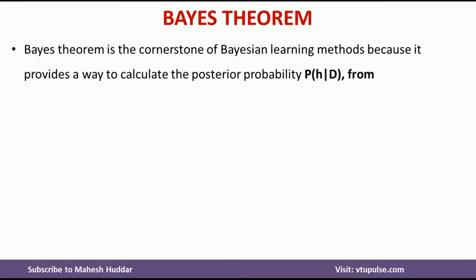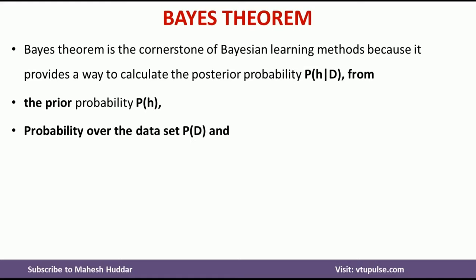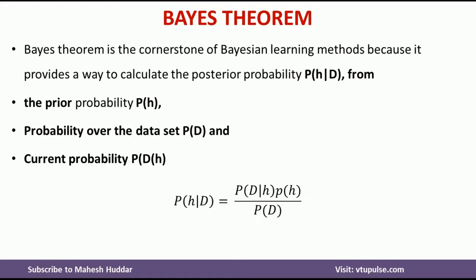Bayes Theorem is the cornerstone of Bayesian learning because it provides a way to calculate the posterior probability — that is, probability of H given D — from the prior probability P(H), the probability over the data P(D), and the likelihood P(D given H). The Bayes Theorem formula is: P(H|D) = P(D|H) × P(H) / P(D).